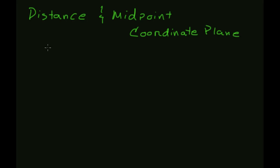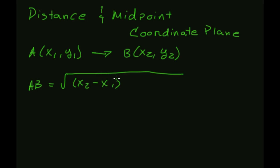Okay, so we have a distance formula. It says that if I want to go from point A at x1, y1 to point B at x2, y2, then the distance from A to B should be the square root of x2 minus x1 squared plus y2 minus y1 squared.